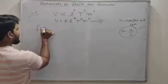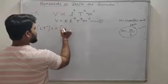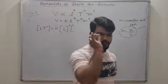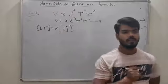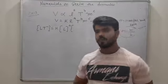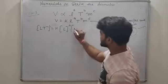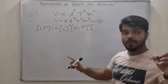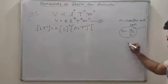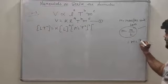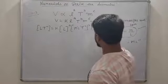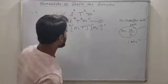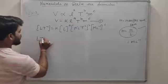V is the velocity — dimensional formula LT-1। L is the length — dimensional formula L। T is the tension — tension is the type of force — M1 L1 T-2 raised to power B। M is the mass per unit length — M upon L — M L-1 की power C। यह step समझे? Mass per unit length given था तो upon length ऊपर जाके minus 1 बन जाएगा।